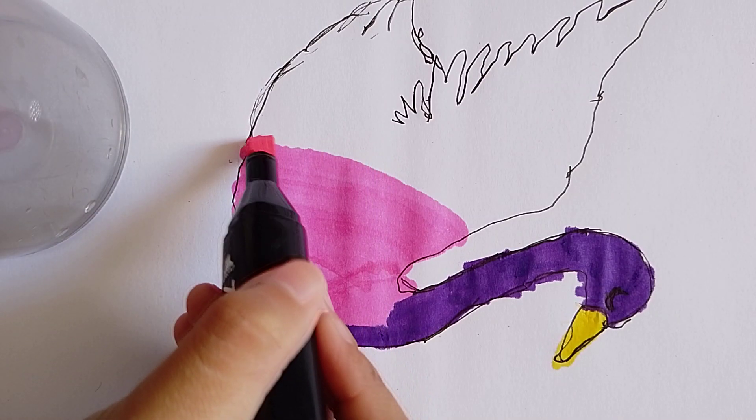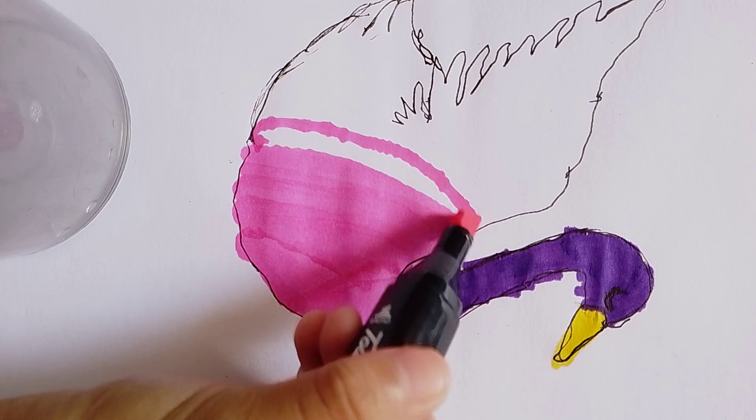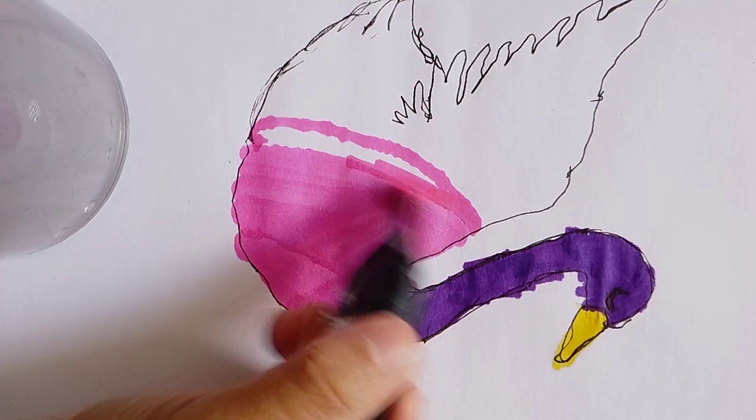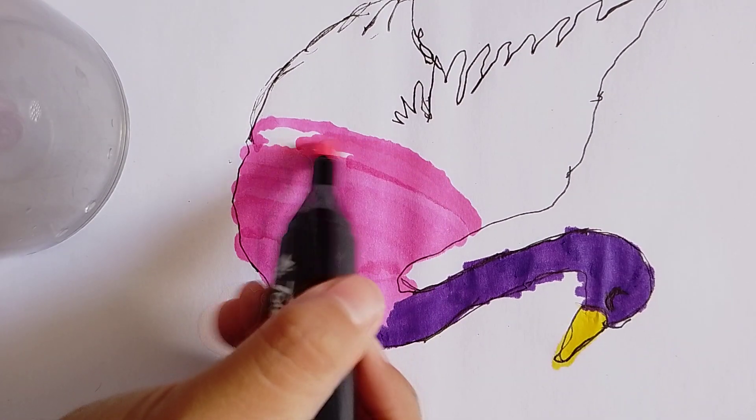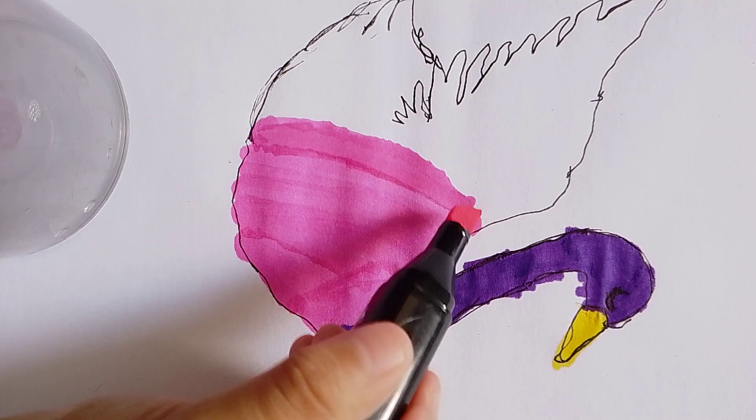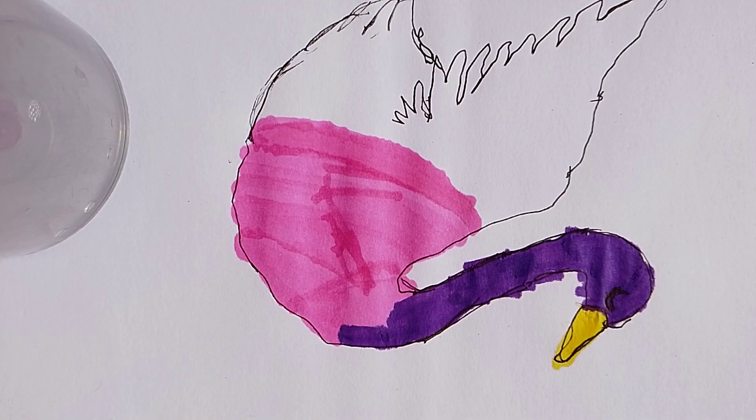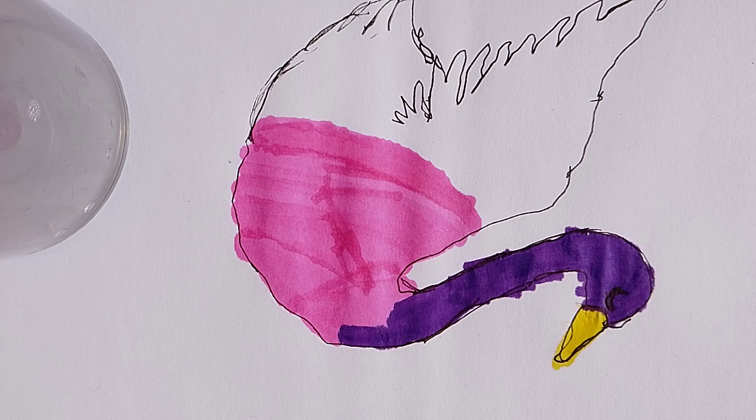I'm sorry this is part two because I accidentally pressed the save button. So I think that's done for the vivid pink. Now let's do this pastel blue like here.